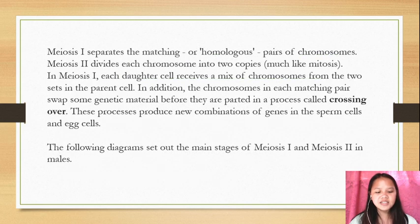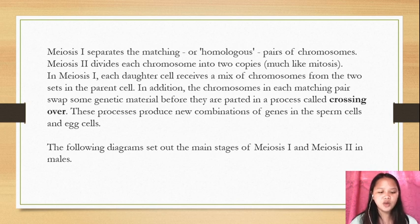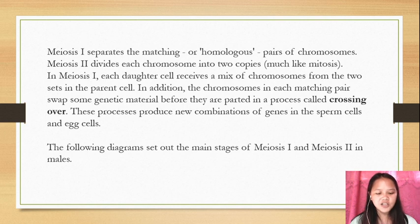In meiosis I, a special cell division reduces the cell from diploid to haploid. The homologous chromosomes pair and exchange DNA to form recombinant chromosomes. Prophase I is divided into five phases.